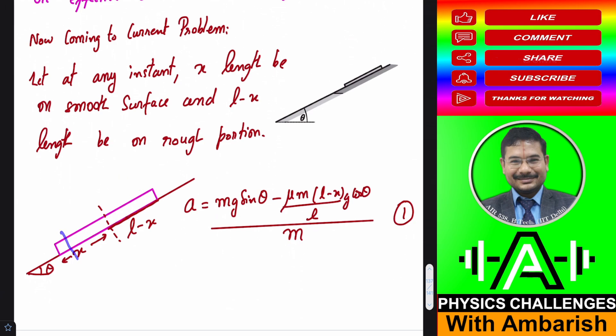Moreover, any particle will experience an mg sine theta downwards, which is also proportional to mass. And if you consider sufficiently thin rod, any element will also experience a frictional force on the rough portion equal to mu mi g cos theta. That is also proportional to mass of the ith element. So we have several forces which are all proportional to mass, so we can talk about effective gravity.